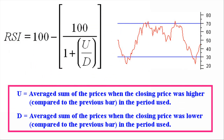The Relative Strength Index is a popular momentum oscillator. Momentum refers to the speed of change. The RSI oscillates between two values: 0 and 100. The RSI was introduced in 1978 by J. Welles Wilder.